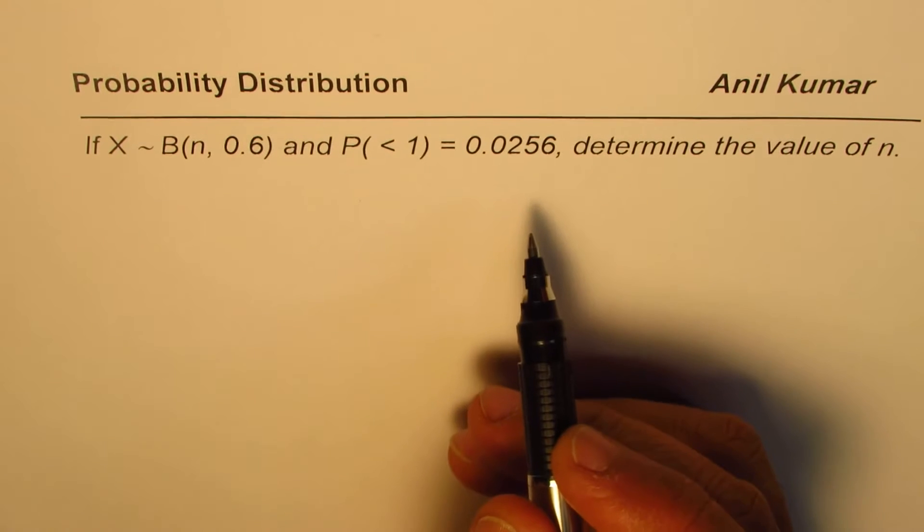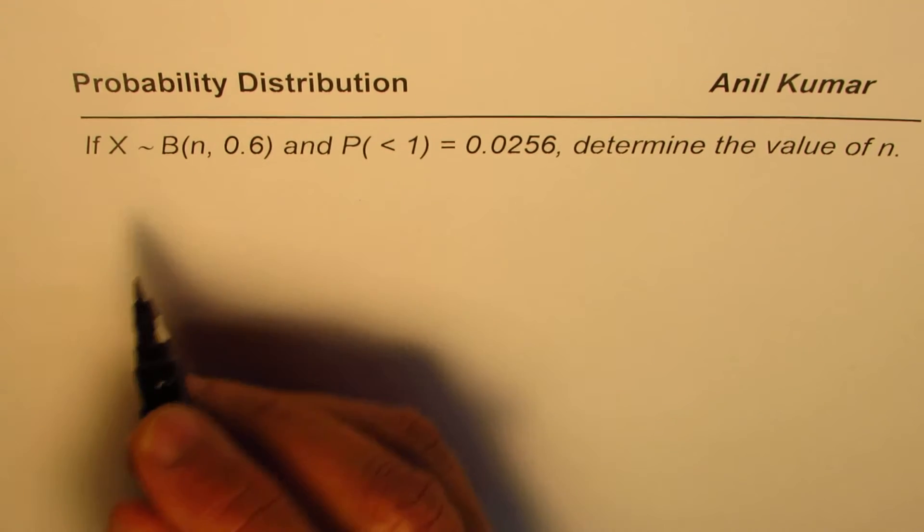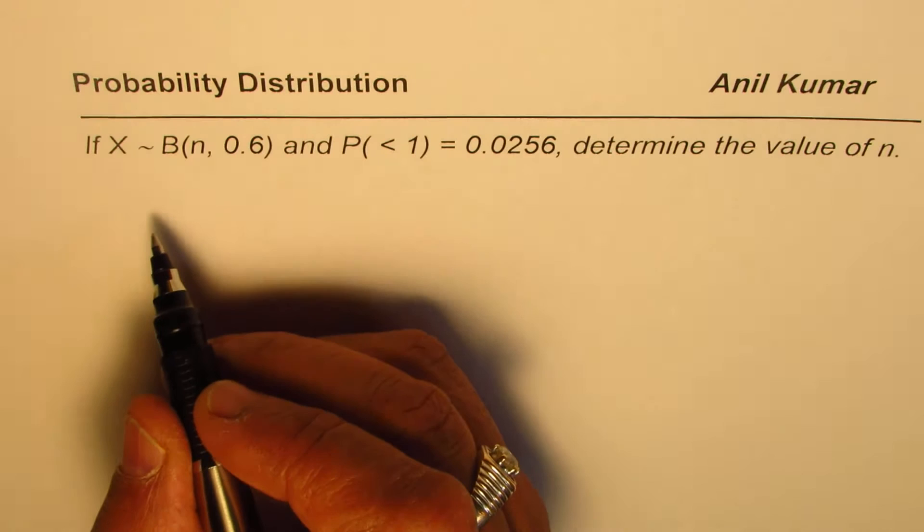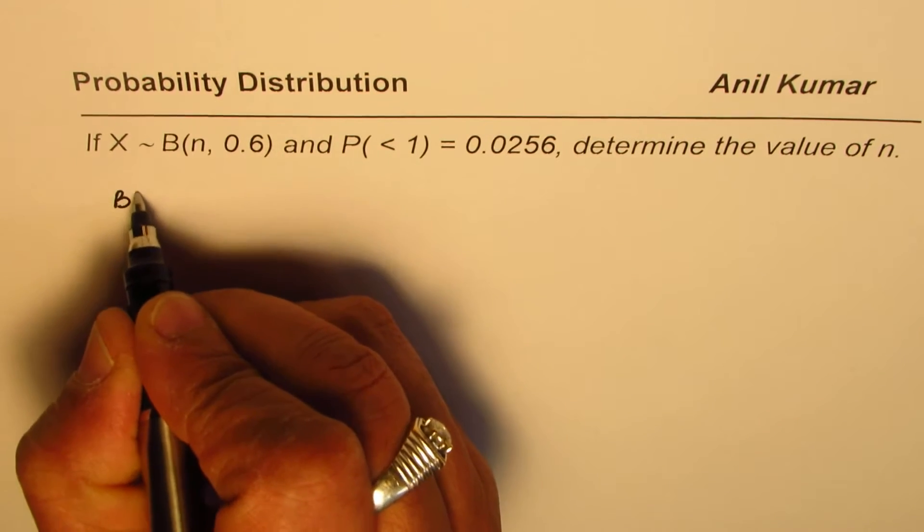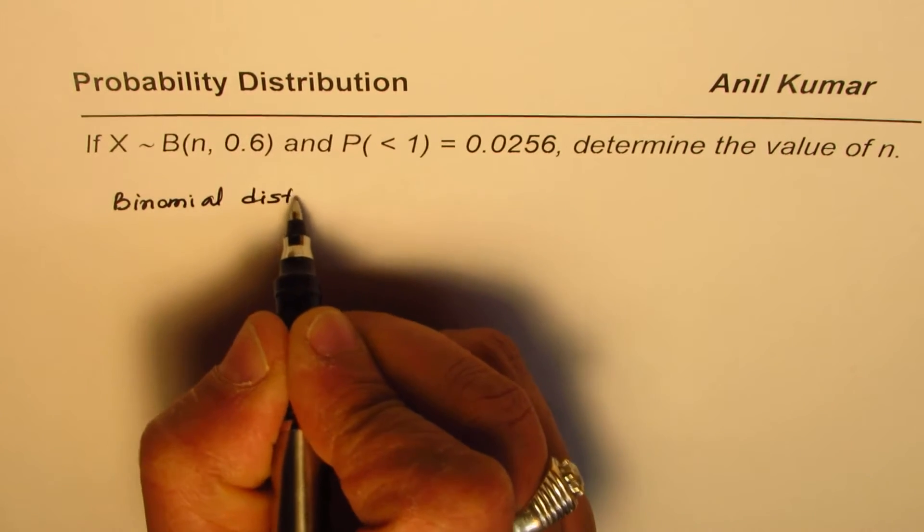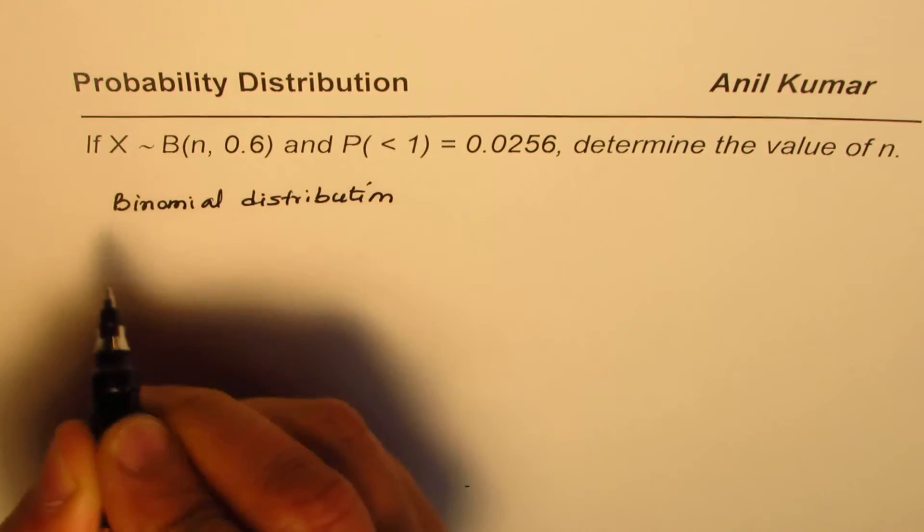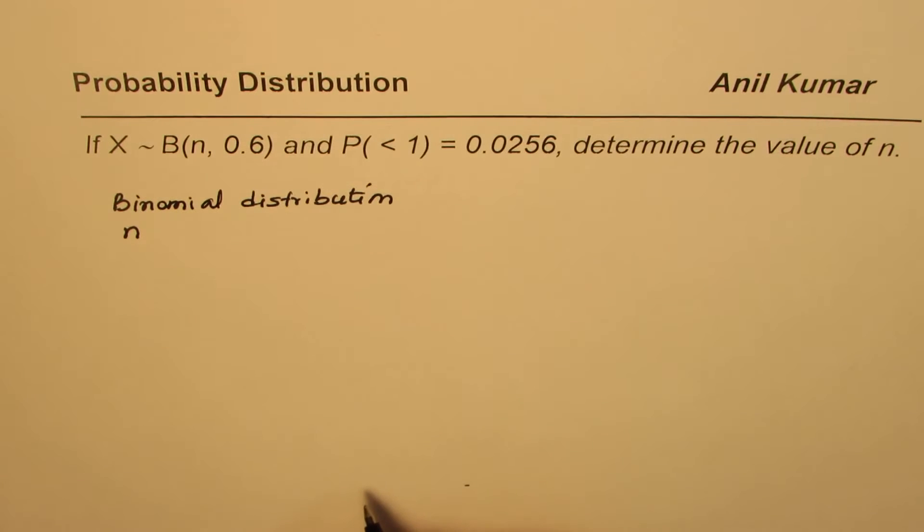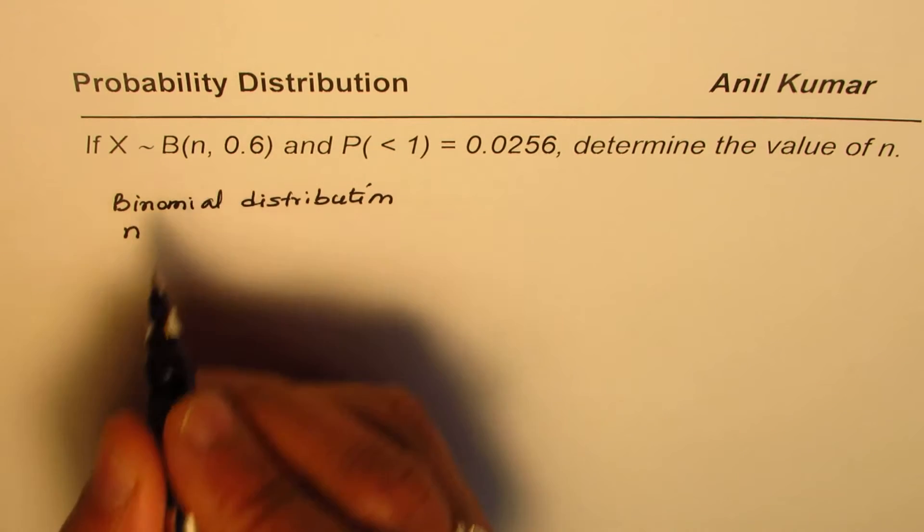Now in this question, we have to apply the formula directly. We are given the case of a random variable X which follows binomial distribution. And n is the number of trials, so n is the total number of times when the event can occur.